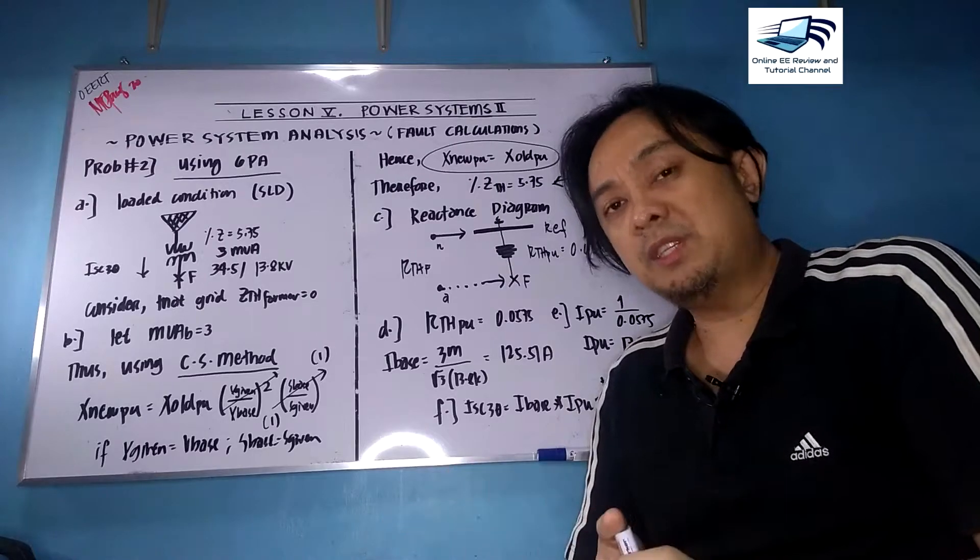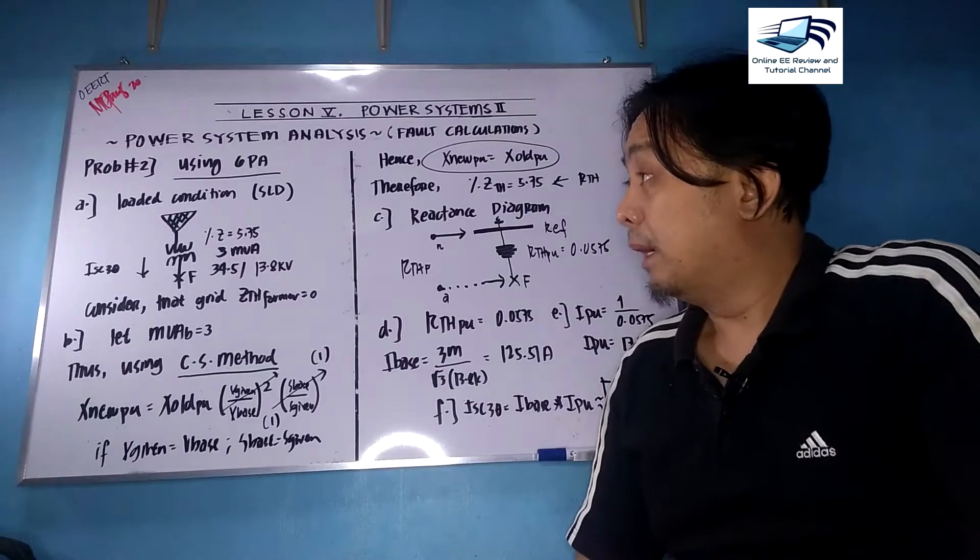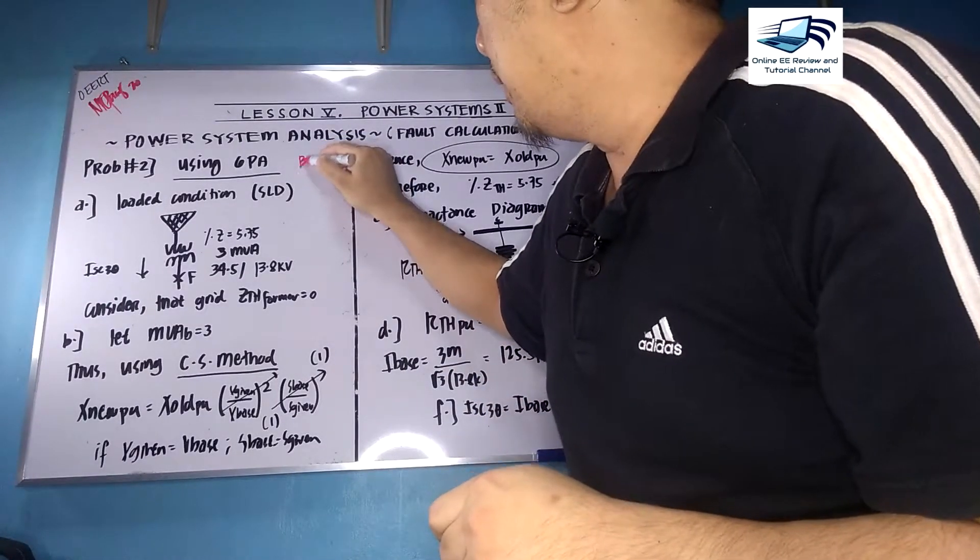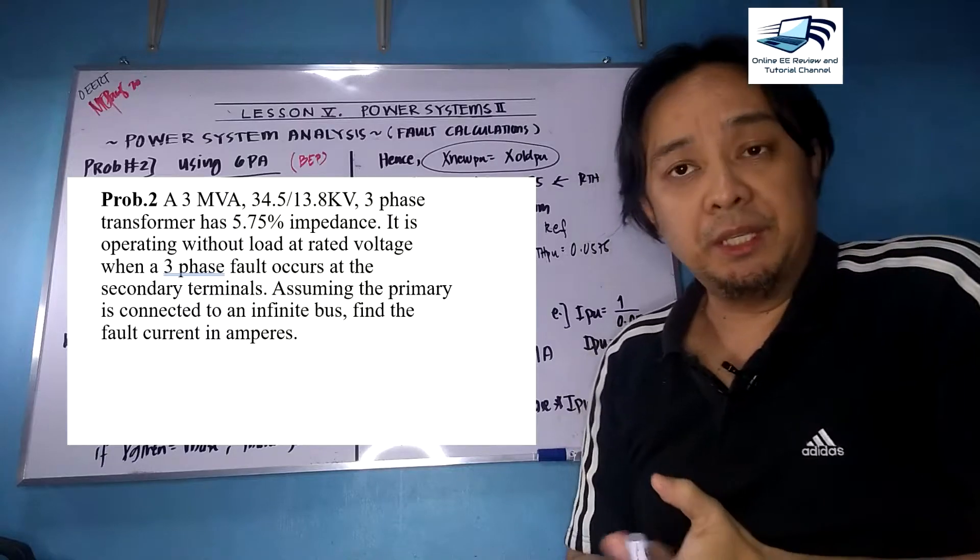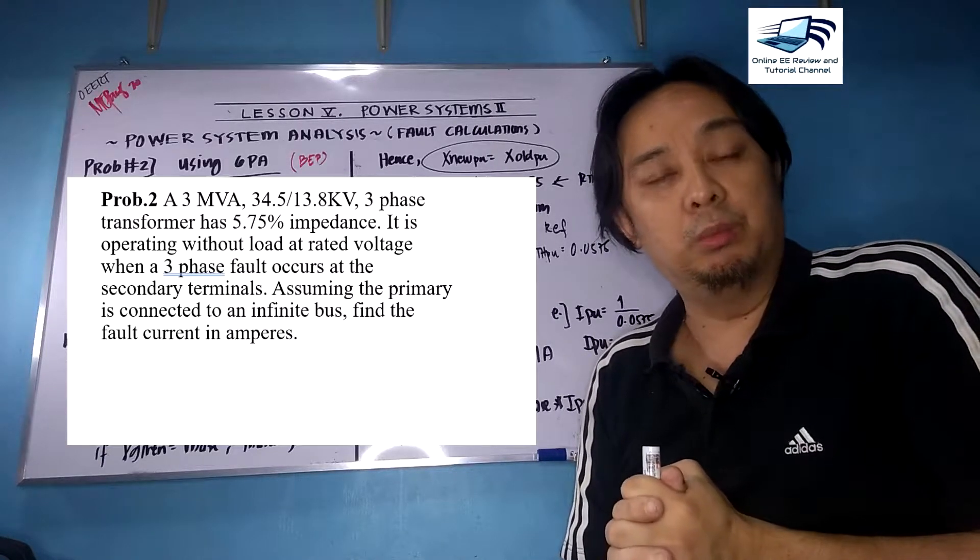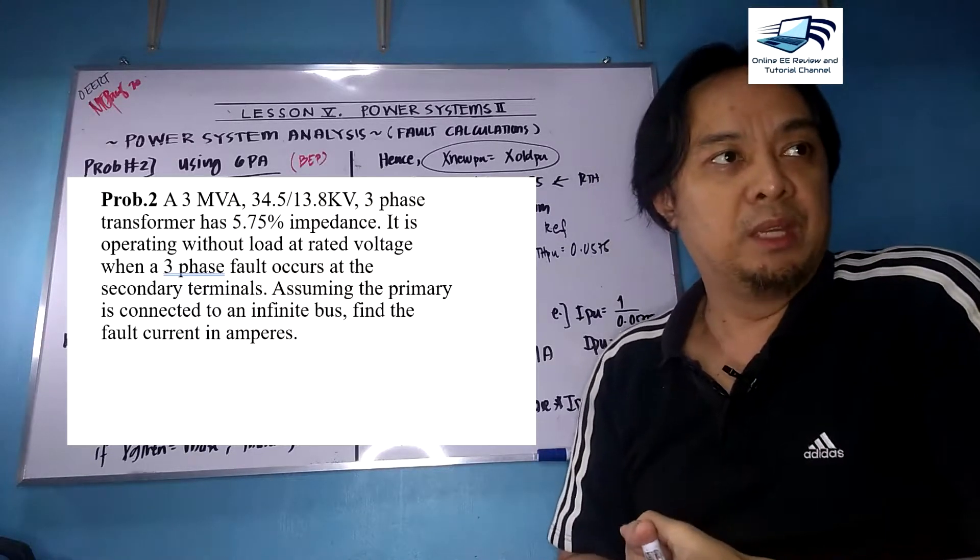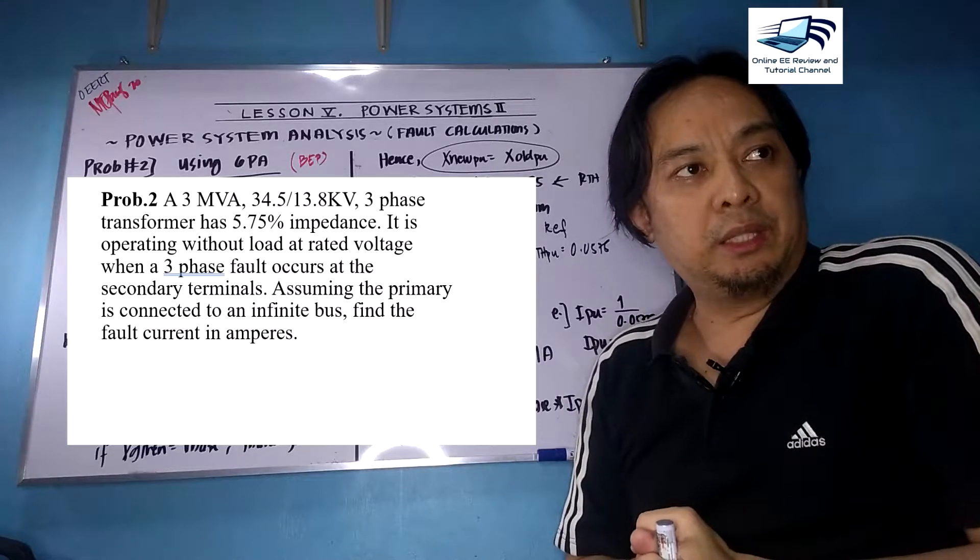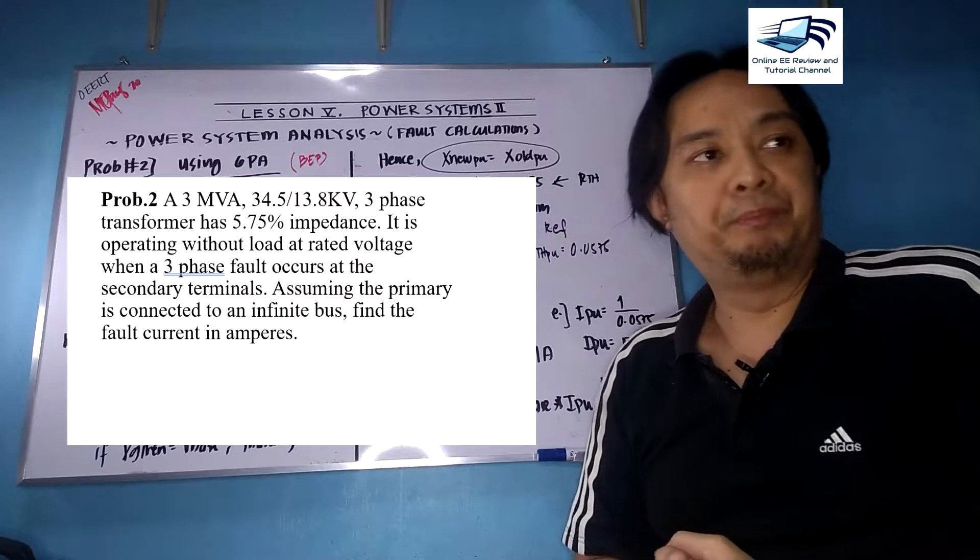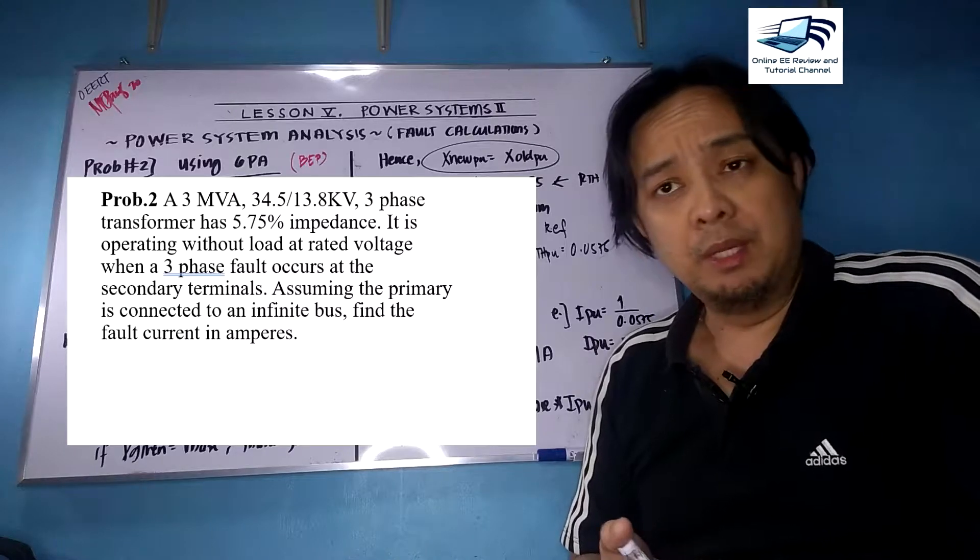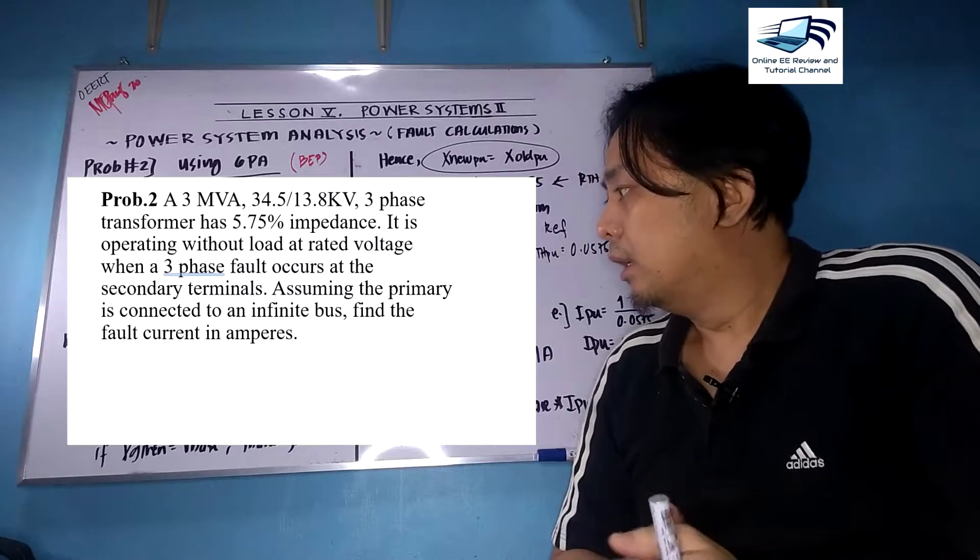Let us read the problem first. Problem number two is a former board exam problem. Here's the problem: A 3MVA, 34.5 to 13.8 kilovolt, three-phase transformer has a 5.75 percent impedance. It is operating without a load at rated voltage when a three-phase fault occurs at the secondary terminals. Assuming the primary is connected at an infinite bus, find the fault current in amperes.